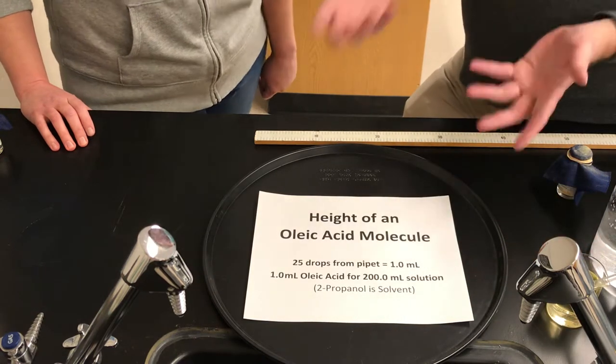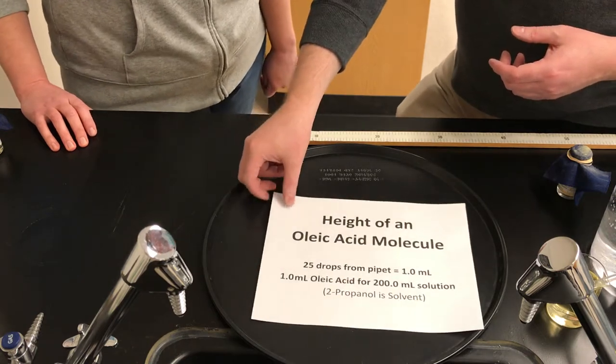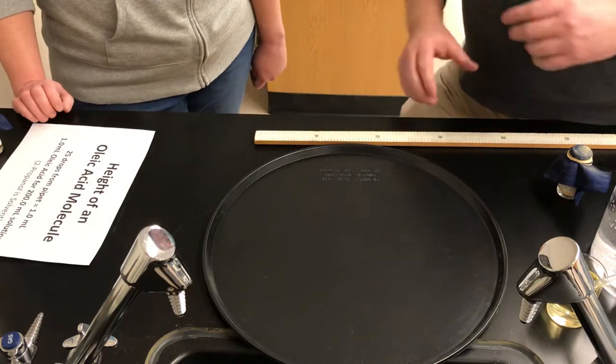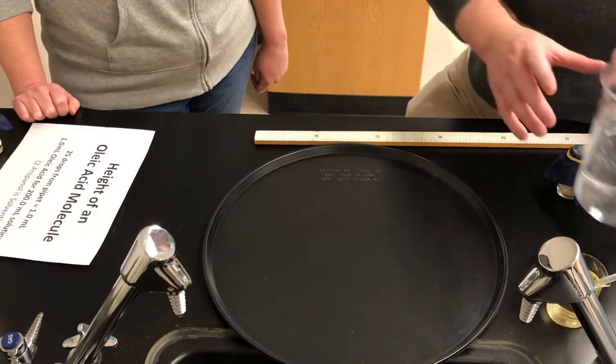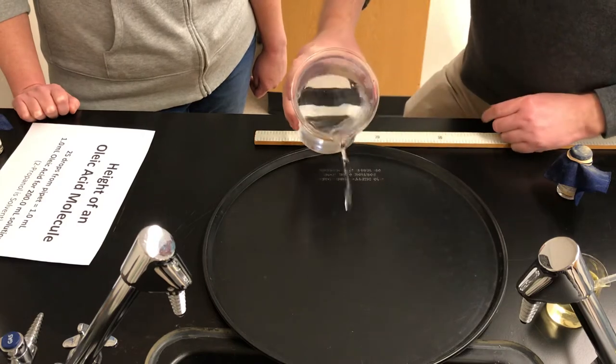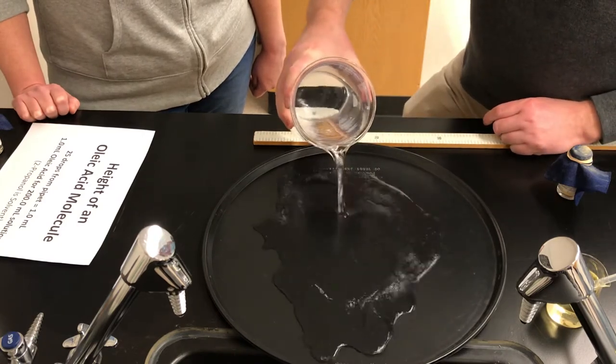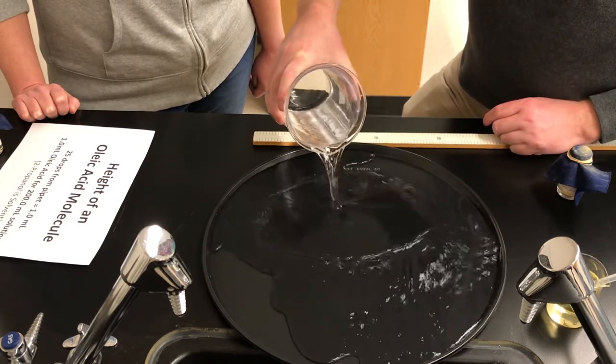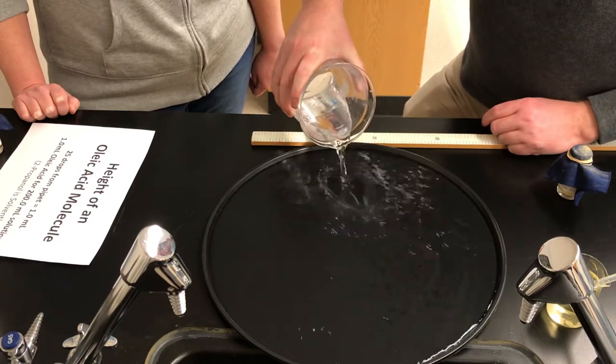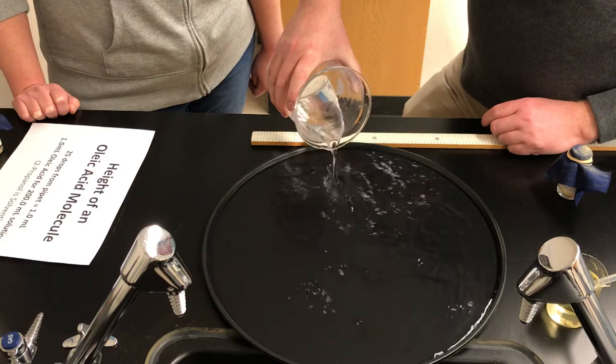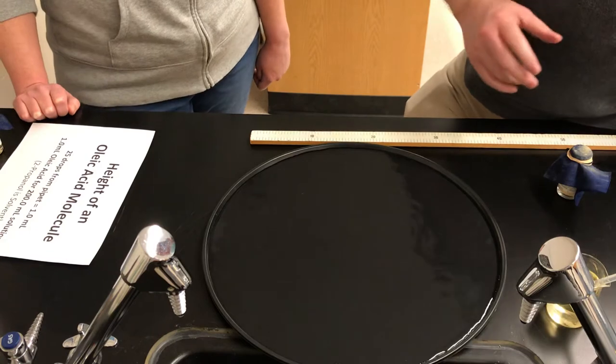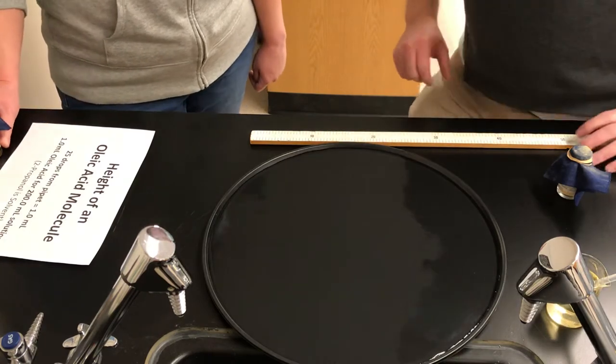So next we're going to actually perform the experiment for you. This is an experiment students do at grade 9 in this unit. We've got a circular plastic tray and some tap water. So I'm just going to pour the tap water into the tray. This is almost a liter of tap water. It has to be deep enough, maybe about half a centimeter deep or so. And now we'll just wait for the surface to settle.